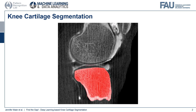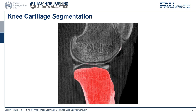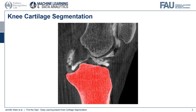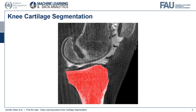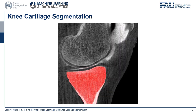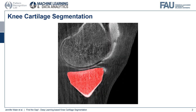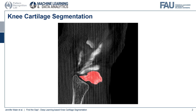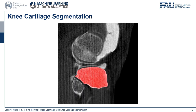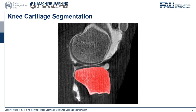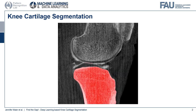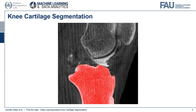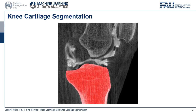Analyzing knee cartilage can help to further the understanding of diseases like osteoarthritis. For this analysis, a segmentation of the structures in the CT images is necessary. You can see in red the segmentation of the tibial bone and the segmentation of the thin line marking the cartilage surface.